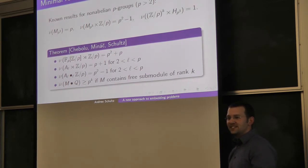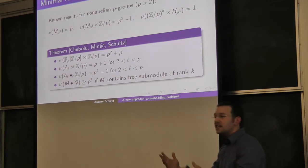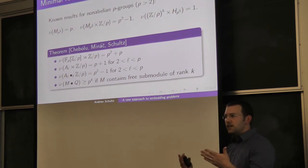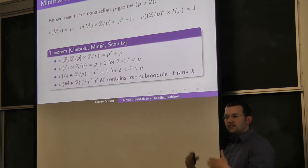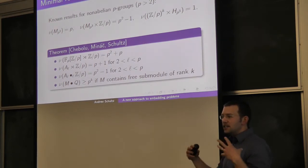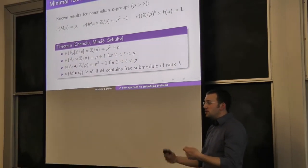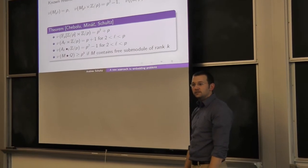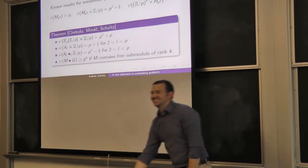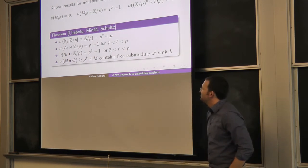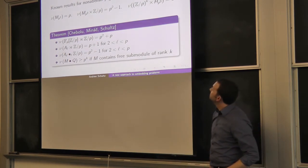Let me wrap up. There are a few other things but they all take the same form. Because we know the structure of J of K, and because these J of K's can be thought of as a parametrizing family for embedding problems, it turns out you can find lots of surprising results about absolute Galois groups just by doing a little bit of linear algebra. Thanks very much for your attention.